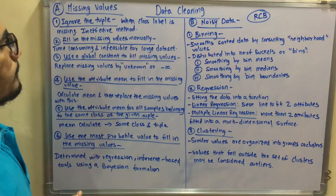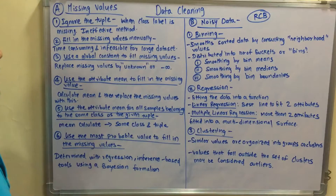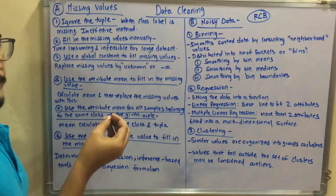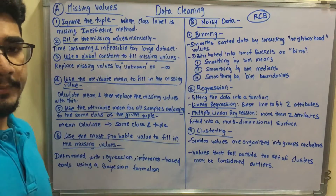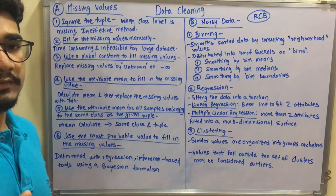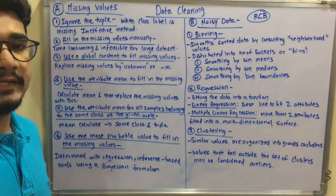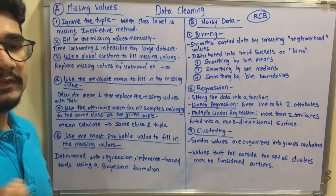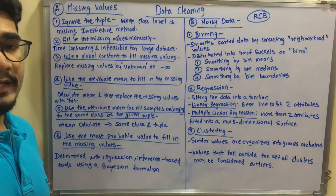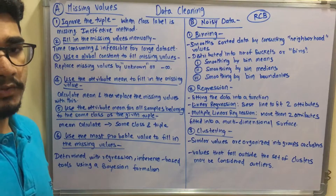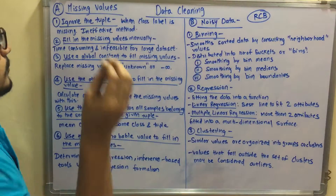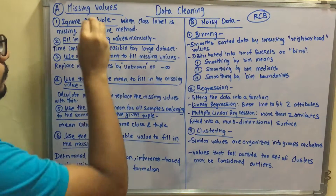In ignoring the tuple, when the class label is missing, you simply ignore the tuple. A dataset may have one column — say a unique ID or some kind of primary key — but you don't have specific values fed in. So what you do is you just remove or ignore that. But that is not a valid or effective way, because you may miss important or valuable information. So this technique is an ineffective method.